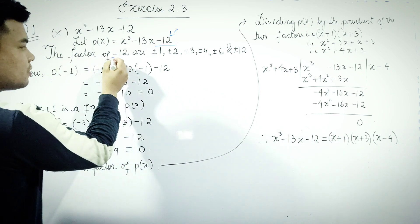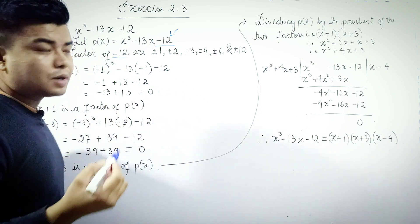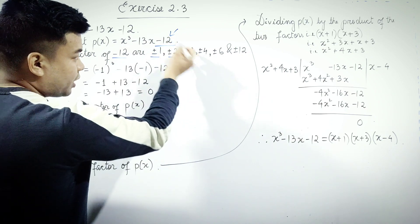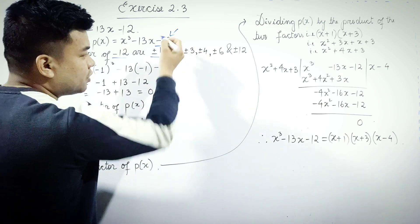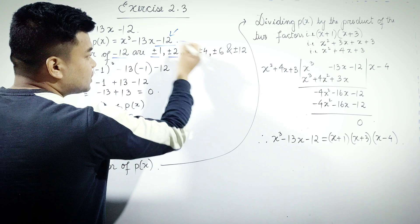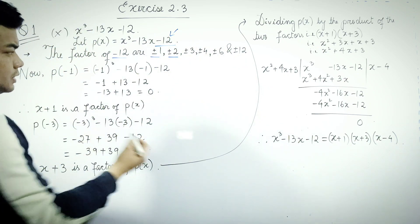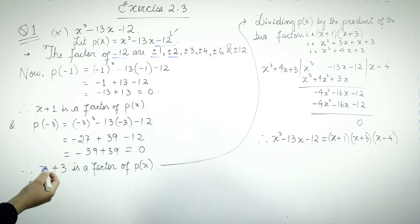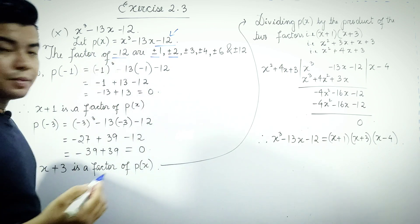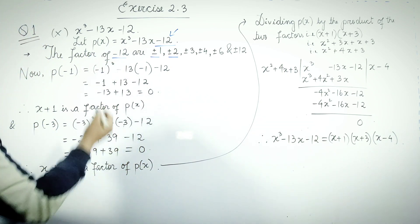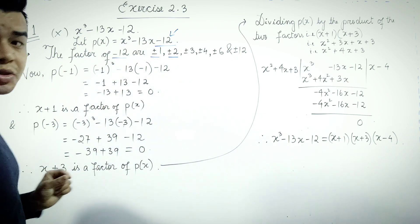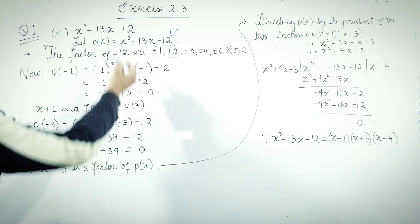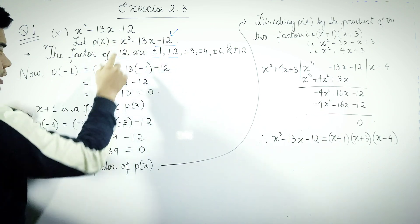We find the factors of minus 12. If we apply x = minus 1, we test whether p(minus 1) equals zero. The factors of minus 12 include minus 1, plus 1, minus 12, plus 12, and others.